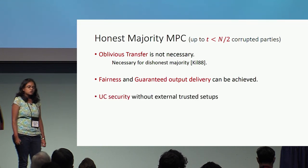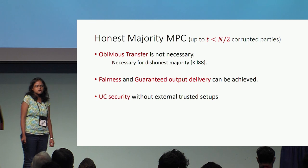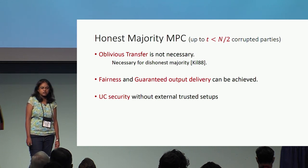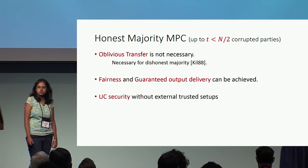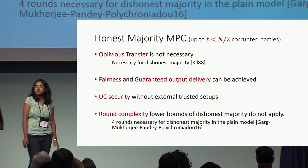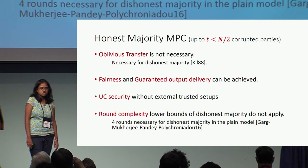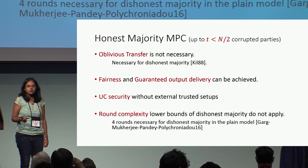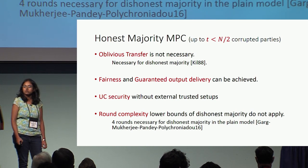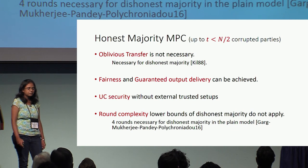UC security is achievable in the Honest Majority setting without any additional trusted setups. One of the primary focuses of this talk is on the round complexity. And interestingly enough, the round complexity lower bounds of the dishonest majority setting do not apply here.